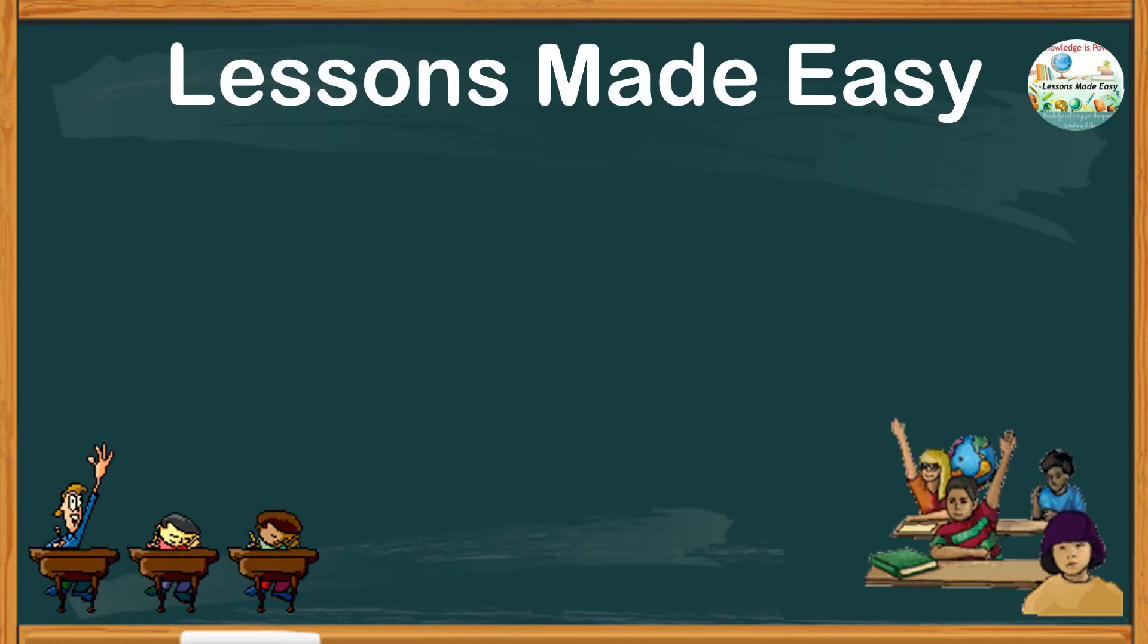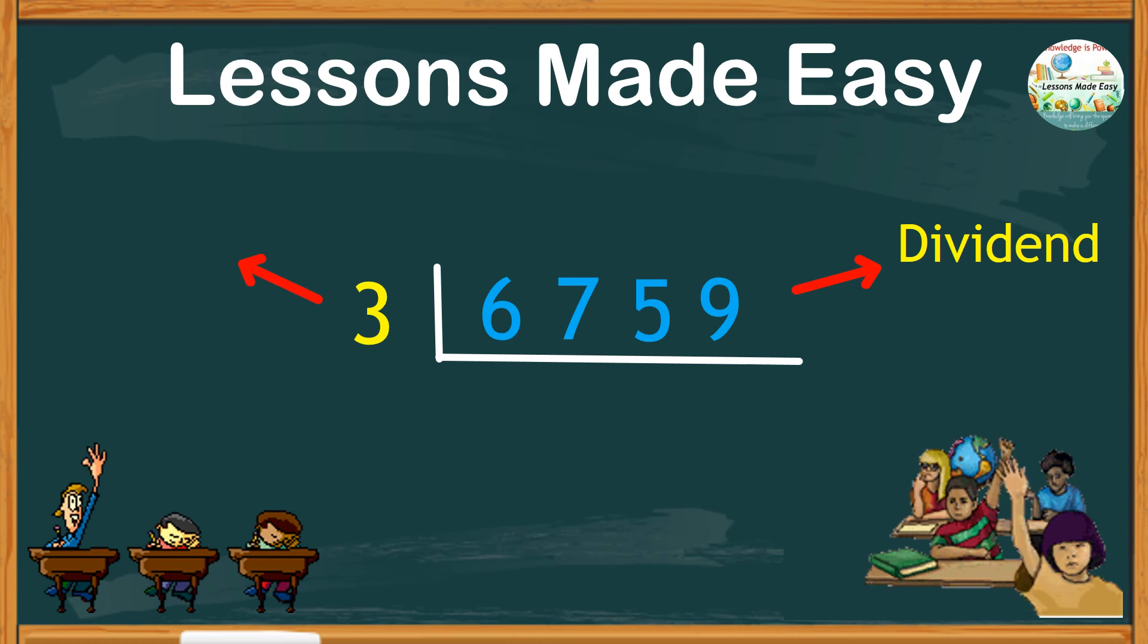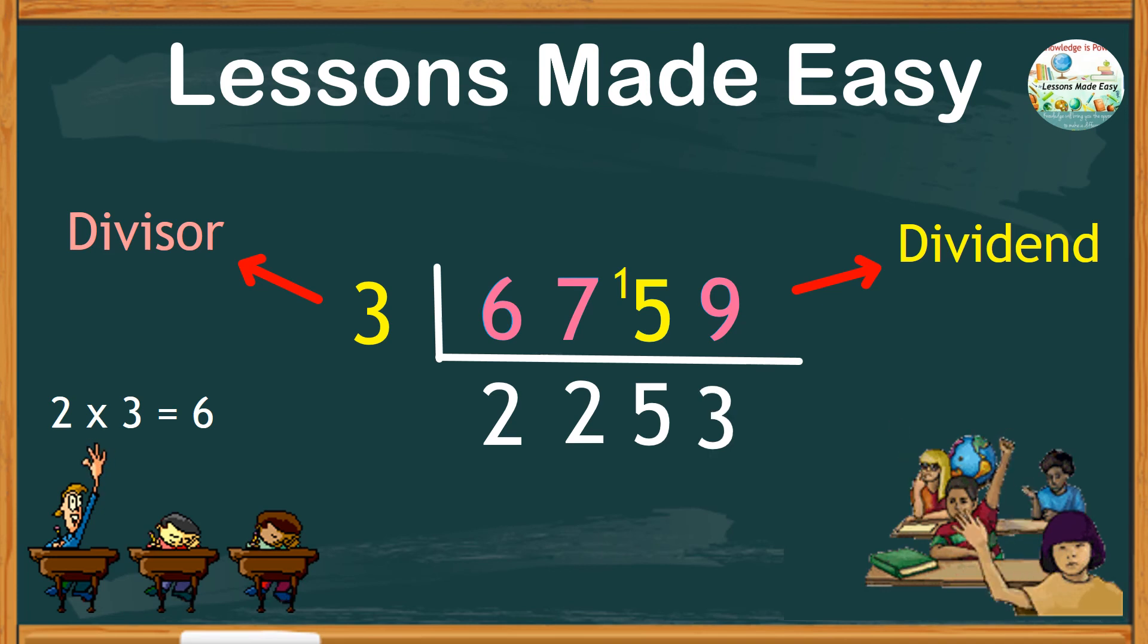If you're already familiar with the concept of division, I suggest you should also try using the short method. See this example, 6,759 as our dividend to be divided by 3 as our divisor. Let's start with the first digit 6 to be divided by 3. We get exactly 2 with no remainder. So, we can move on to 7. 7 divided by 3, again, we can make 2 sets. However, 2 times 3 is only 6. So, we still have extra 1 to be combined with the next digit, that is 5, making the number 15. And 15 divided by 3, we get exactly 5 with no remainder. Then move on to the last digit 9. Divided by 3, we get 3. So, there you have it. 6,759 divided by 3, the quotient is 2,253.